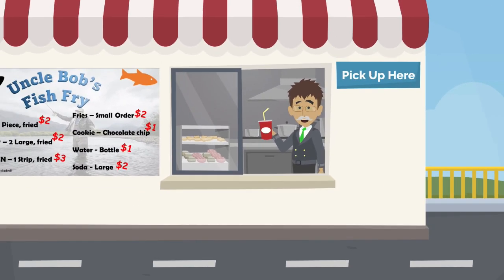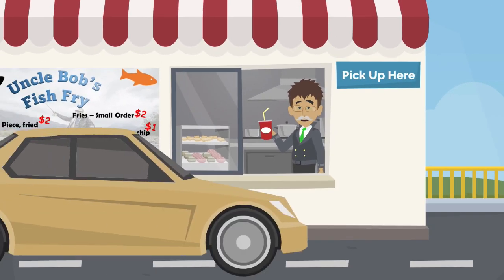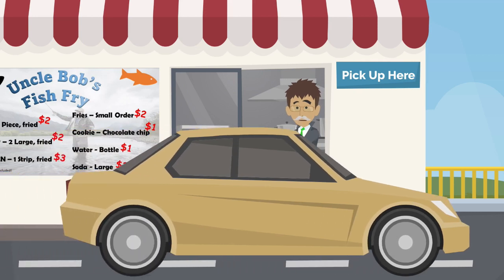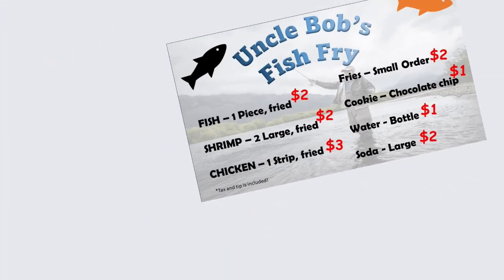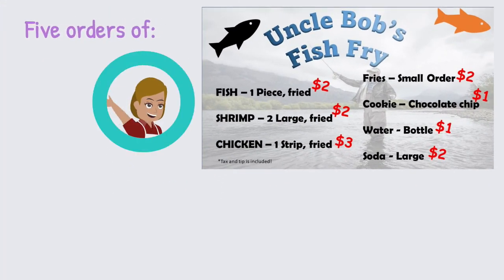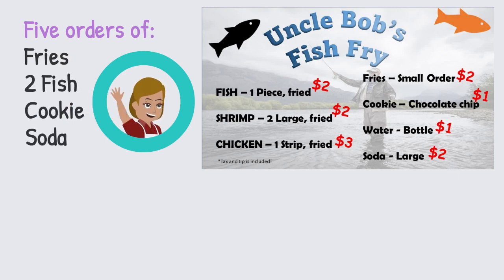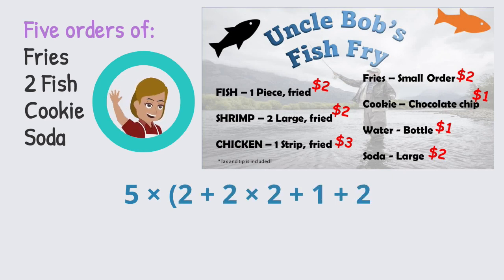In my mathematical world, I have one little problem. I'm helping raise money for a charity by working the drive-thru at Uncle Bob's Fish Fry. Help me calculate the amount of each order. Heather orders fries, 2 pieces of fish, a cookie, and a large soda for herself and 4 friends. The expression representing her order is 5 times the quantity 2 plus 2 times 2 plus 1 plus 2. What is her total?